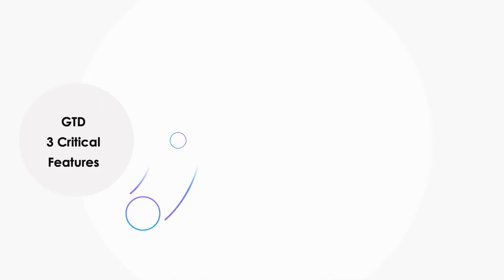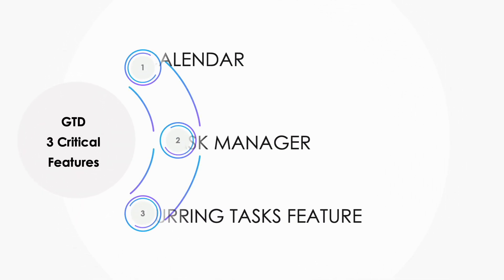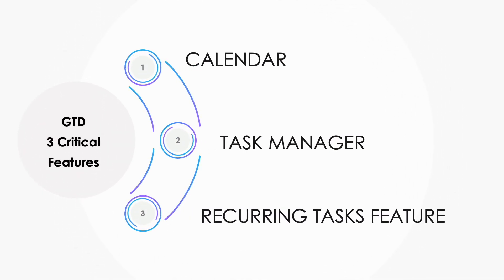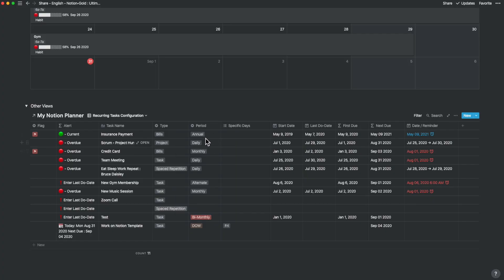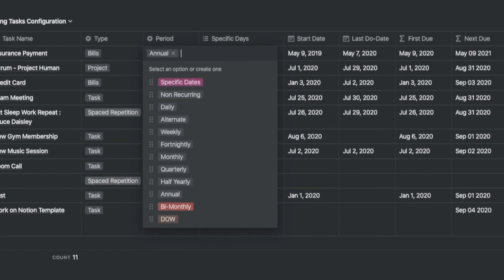I look at GTD as having three critical features: a calendar, a task manager, and a recurring tasks feature. Two of the three features that we are going to discuss today are new functionality for recurring tasks.